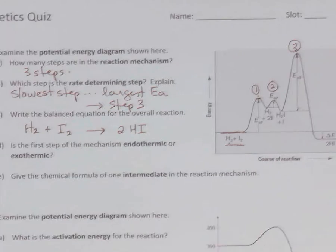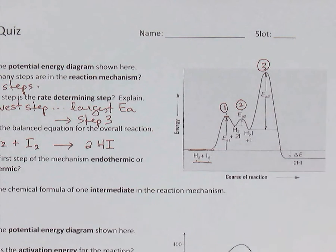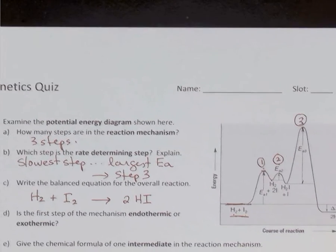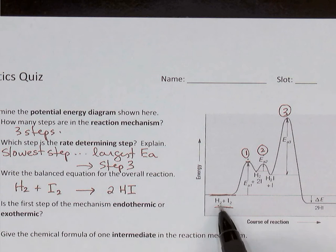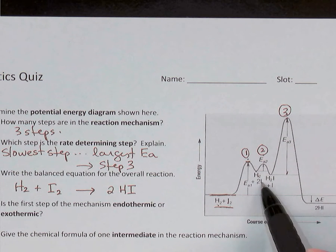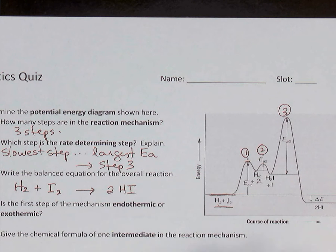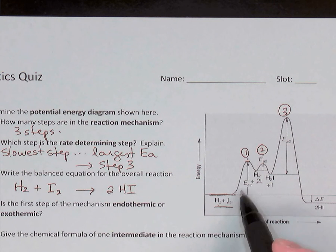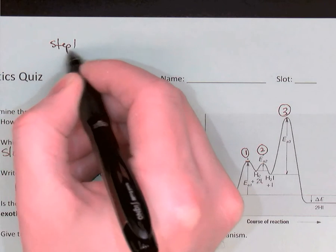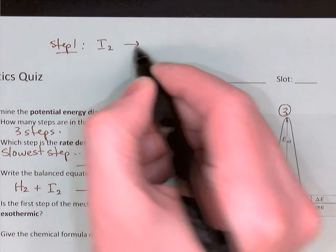We can actually see the reaction mechanism labeled clearly in this diagram. In the first step, we see H₂ and I₂ on one side, and on the other side of that first step we see H₂ and two I's. If I cancel out what's the same on both sides — the H₂ — whatever's left gives the first step of the mechanism. So step one: I₂ becomes two I's.